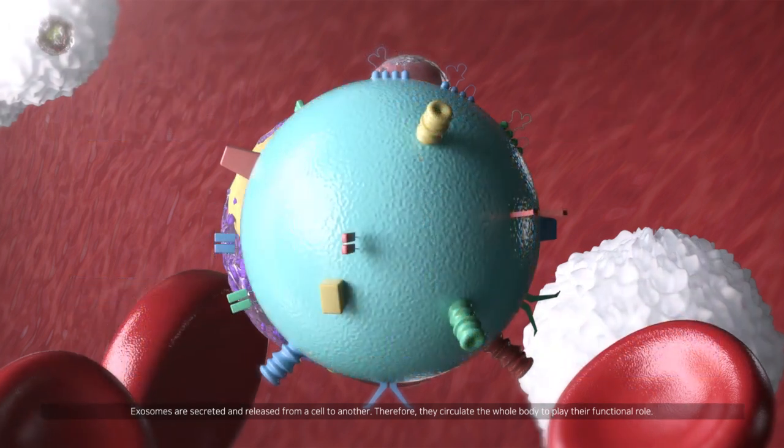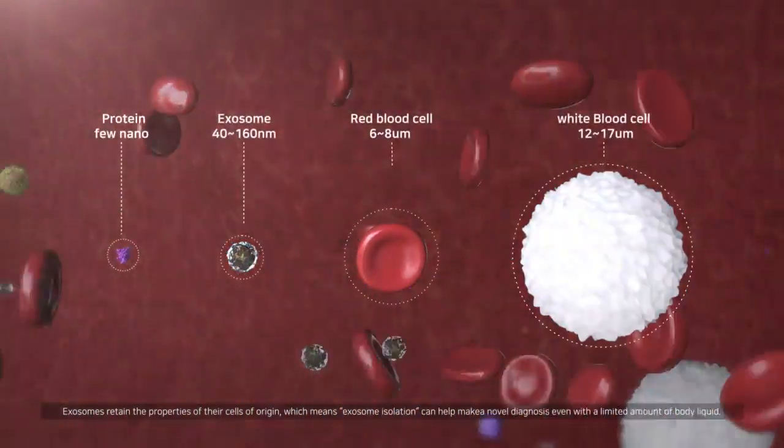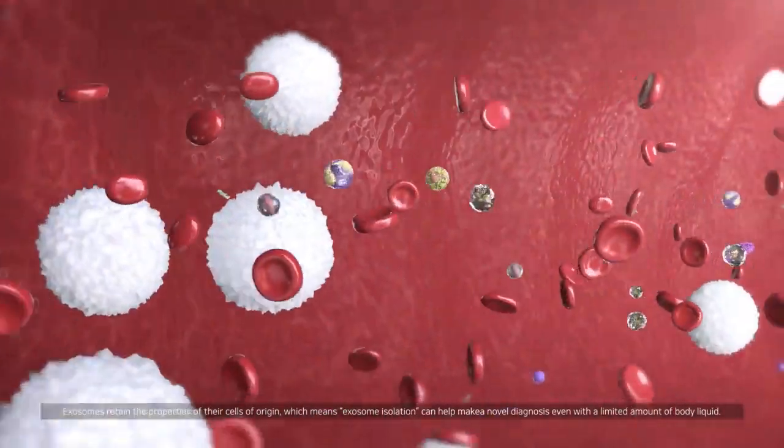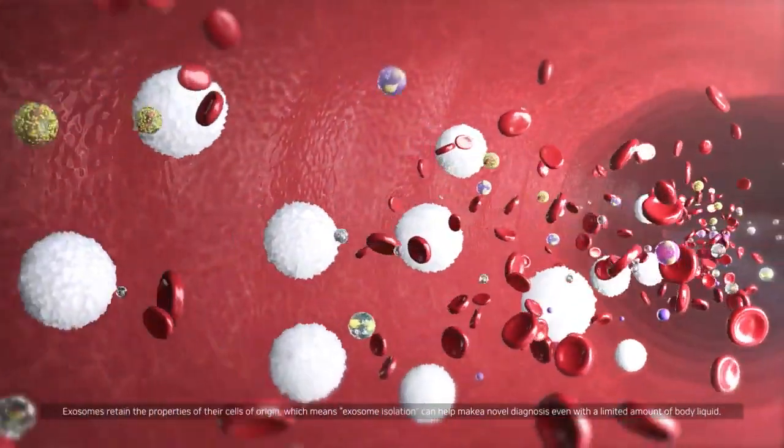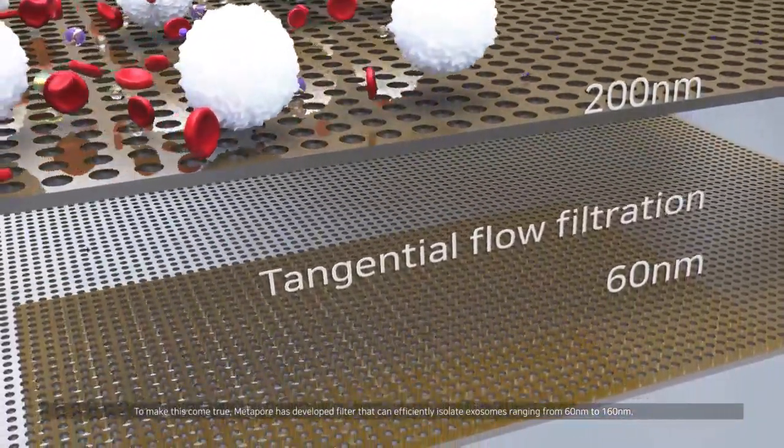Exosomes are secreted and released from a cell to another, therefore they circulate the whole body to play their functional role. Exosomes retain the properties of their cells of origin, which means exosome isolation can help make a novel diagnosis even with a limited amount of body liquid.